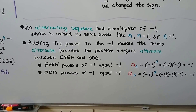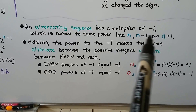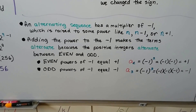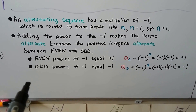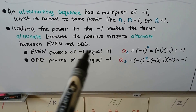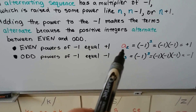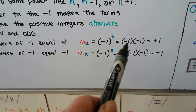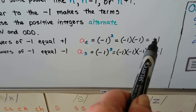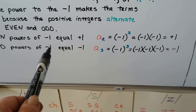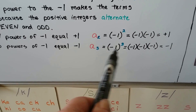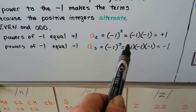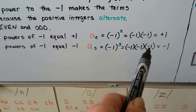It's got that negative one to the nth, raised to some power like n or n minus one or n plus one. Adding the power to the negative one makes the terms alternate because the positive integers alternate between even and odd. Even powers of negative one are going to be a positive one — when we do negative one times negative one, we have two negatives, it makes a positive. An odd power of negative one is going to be a negative one — negative one times negative one times negative one: those two make a positive, and when we multiply it to this one, it makes a negative.